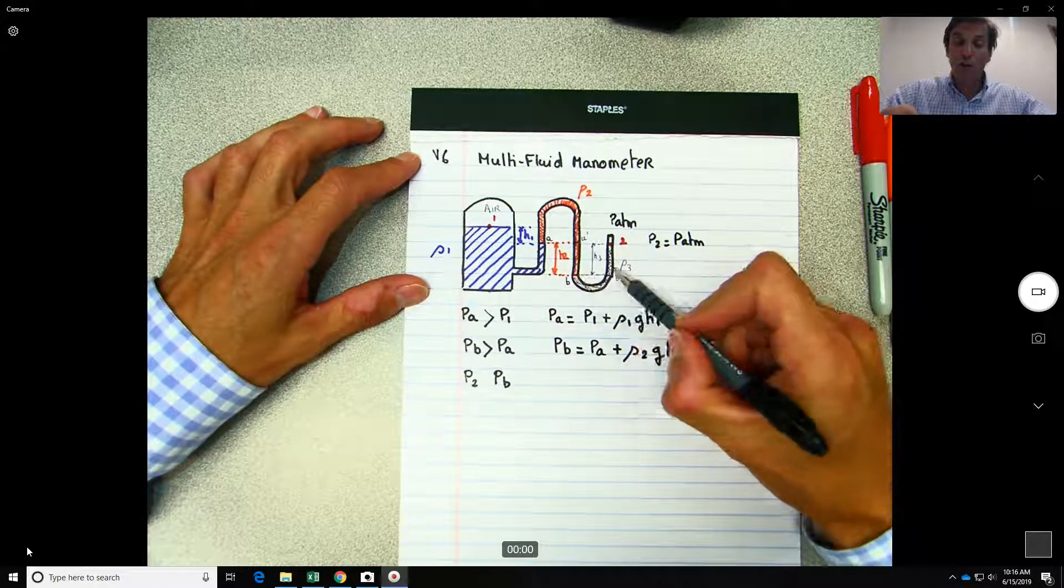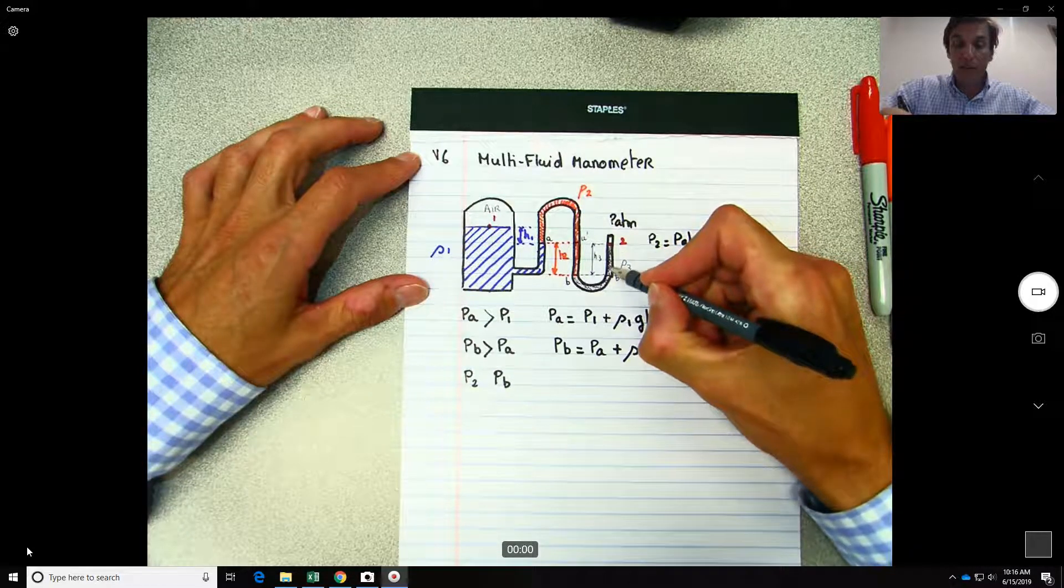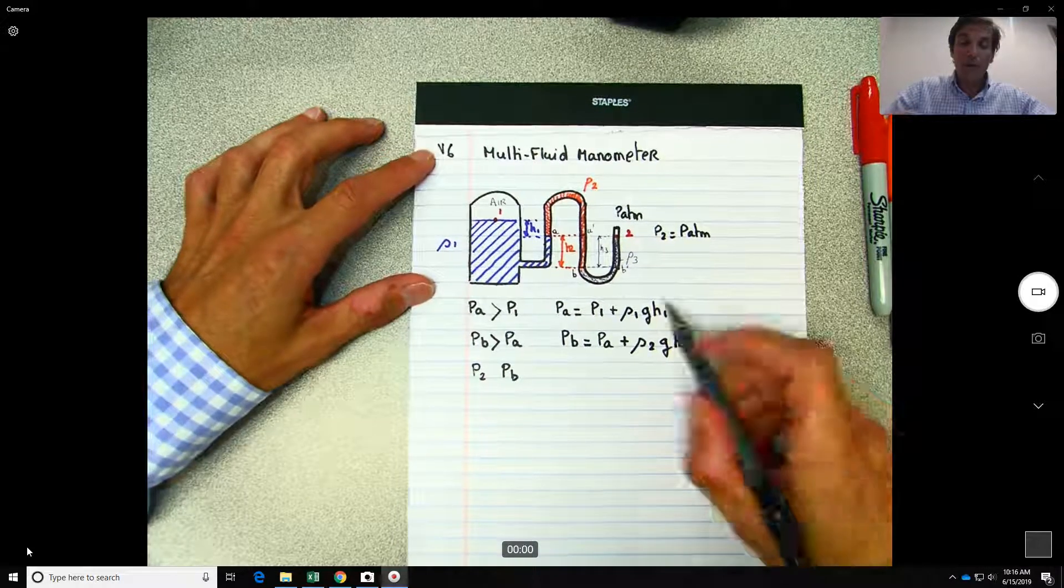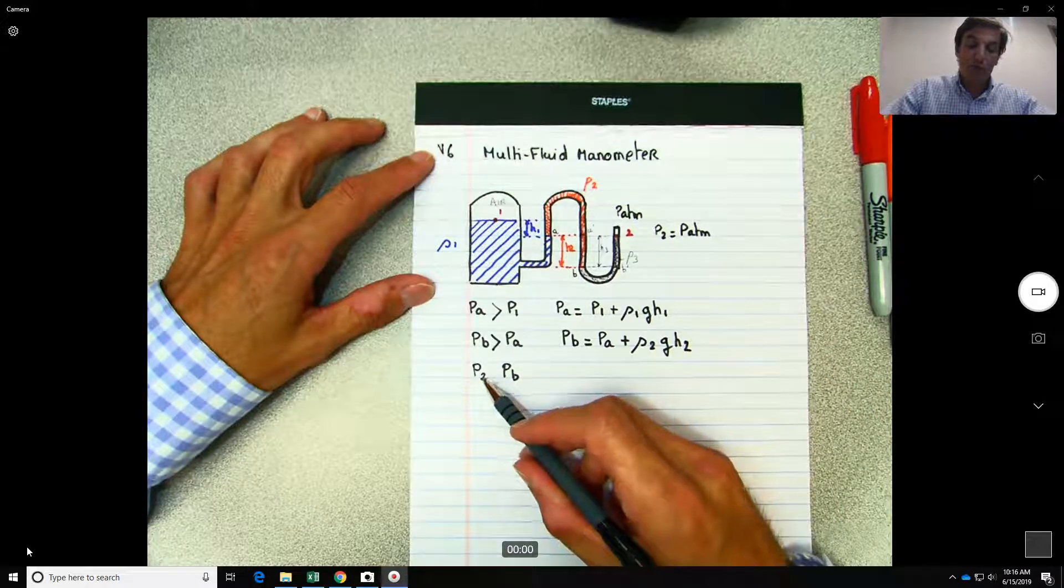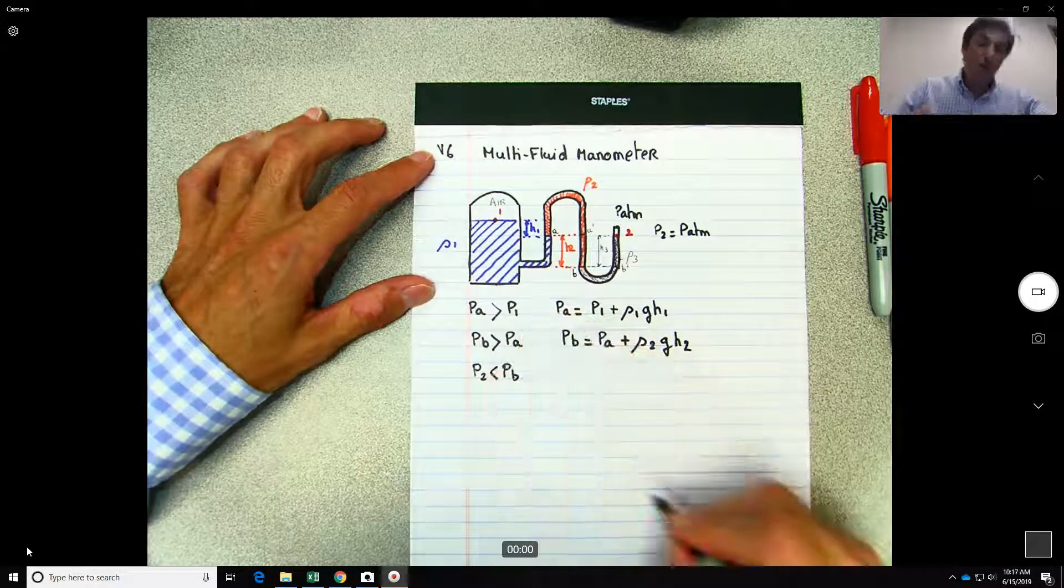Okay, so basically you need to say that the pressure at point two is actually lower than the pressure at point B.